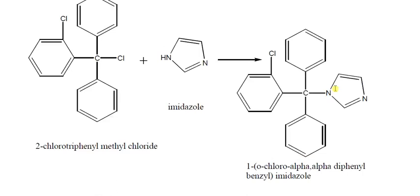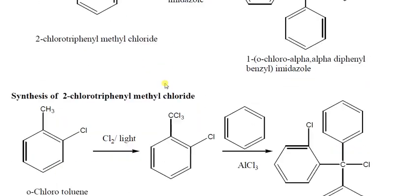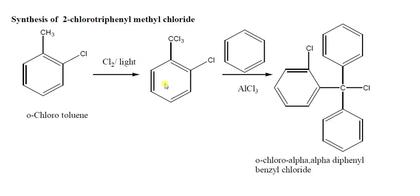The byproduct of this final reaction is hydrochloric acid (HCl), formed by the displacement reaction. This is the complete synthetic method of clotrimazole. Thank you.